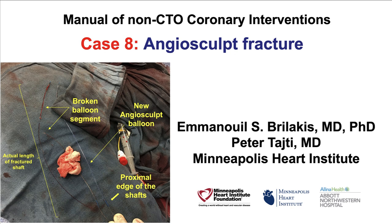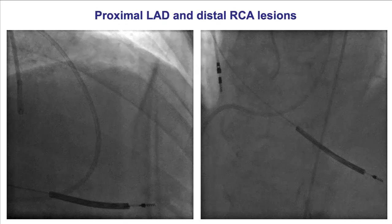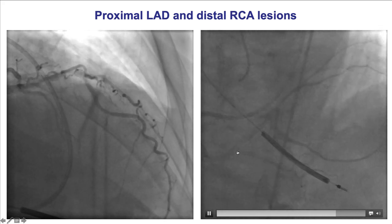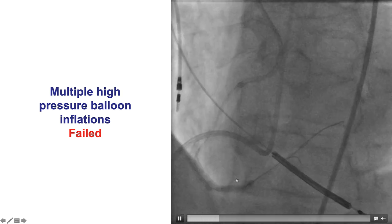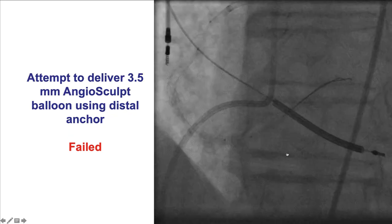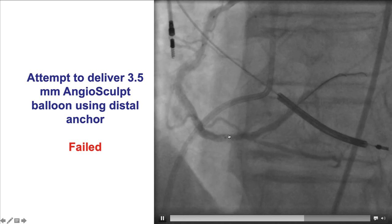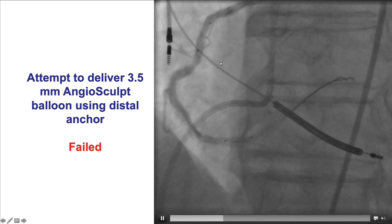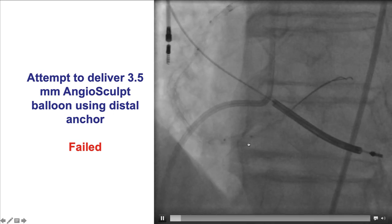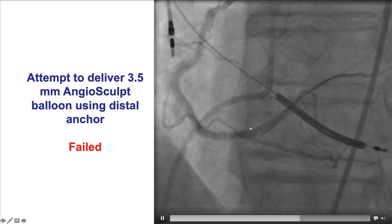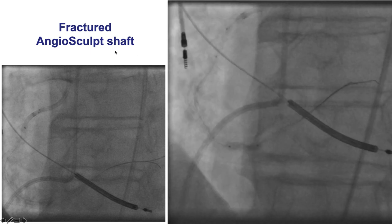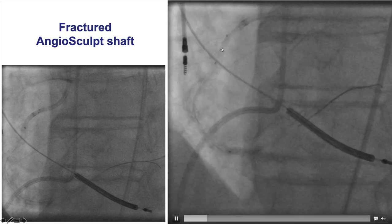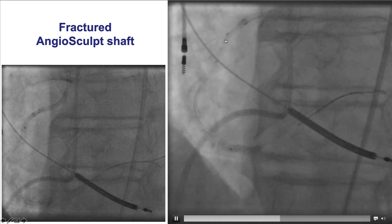This is another case — an angiosculpt balloon fracture — loaded separately as part of the PCI manual cases. The patient had a heavily calcified distal right coronary artery lesion that was very challenging to expand despite several high-pressure balloon inflations with a buddy wire. The decision was made to use an angiosculpt balloon, using the distal anchoring technique to deliver it over a second guide wire. Unfortunately, during those attempts, the shaft of the angiosculpt balloon fractured.